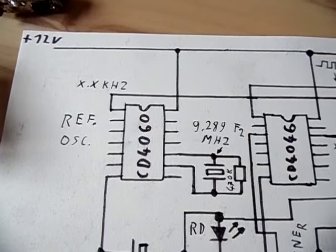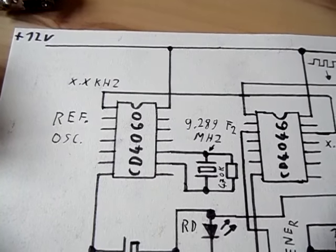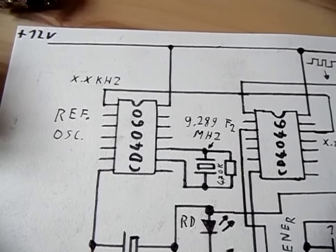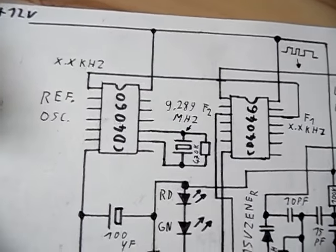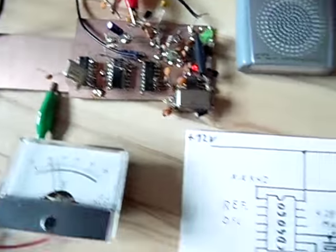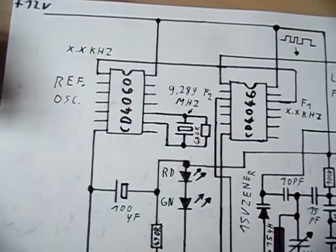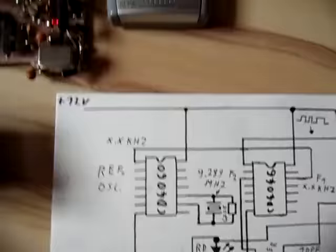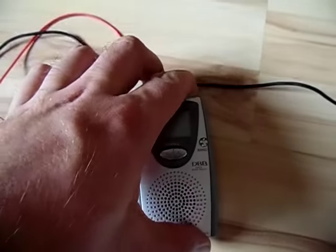The PLL transmitter starts with a reference oscillator which you can see here. It has been built around the CD4060 divider IC, and here you can also see the crystal or quartz that is used. It's a 9.289 megahertz crystal, which gives you a frequency of around 89.3.